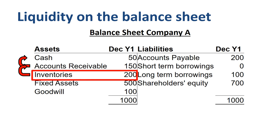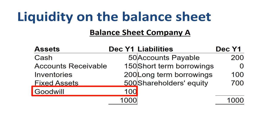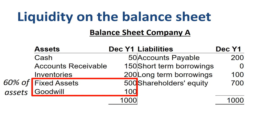Fixed assets are not very liquid. To convert them to cash, you will need to produce product on them, sell the product, and collect the receivable. Goodwill is an example of an intangible asset that is very illiquid. So if you judge the balance sheet of this company purely on the assets side, you could say that it is not very liquid, as most of the asset value is in fixed assets and goodwill.